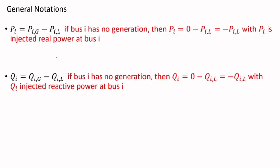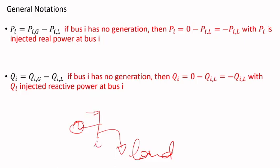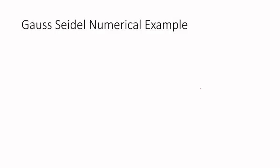A general notation: if a bus has both generation and load, the net injected power at bus i is generation minus load. If the bus has no generation, the injected power is negative (load only). The same notation applies to reactive power Q.